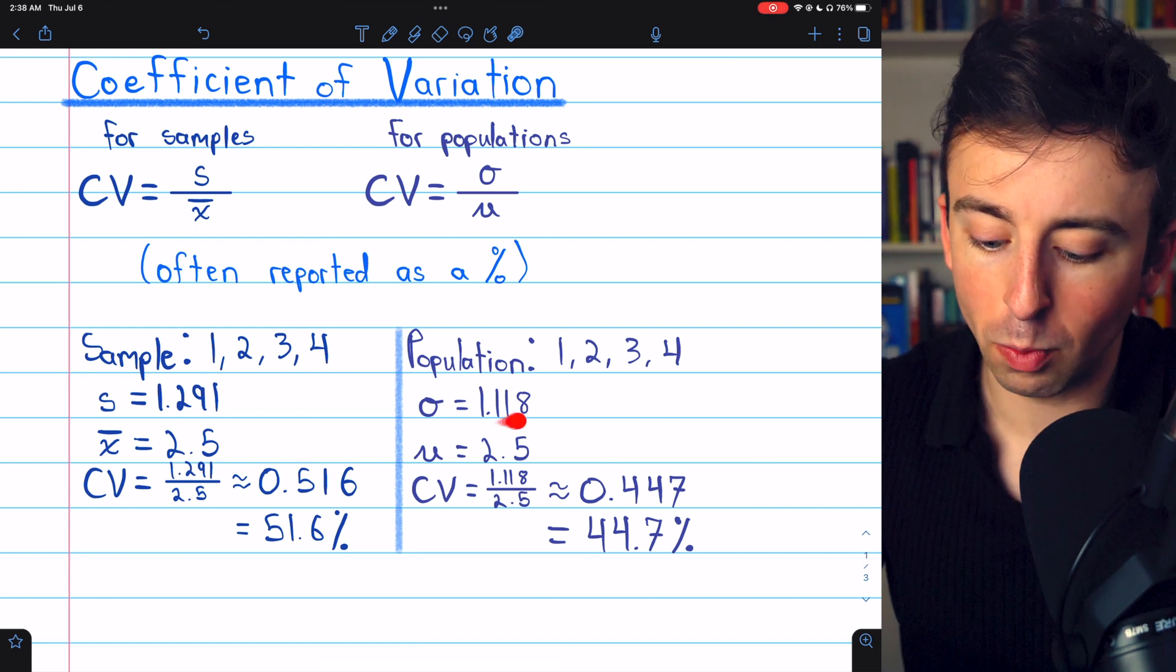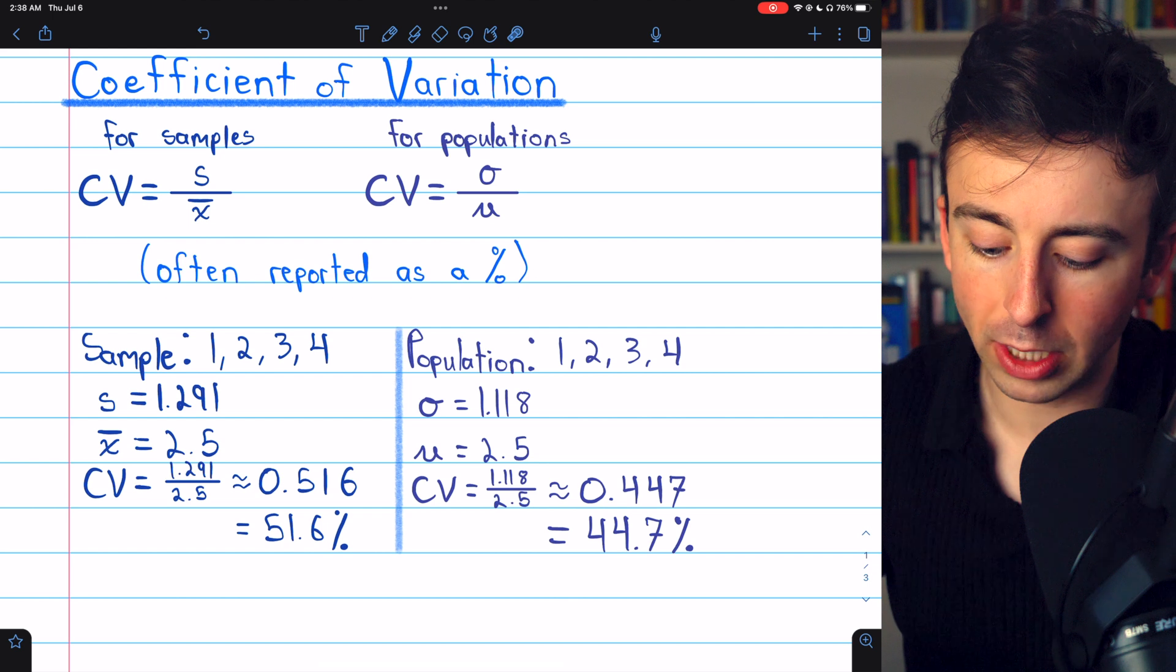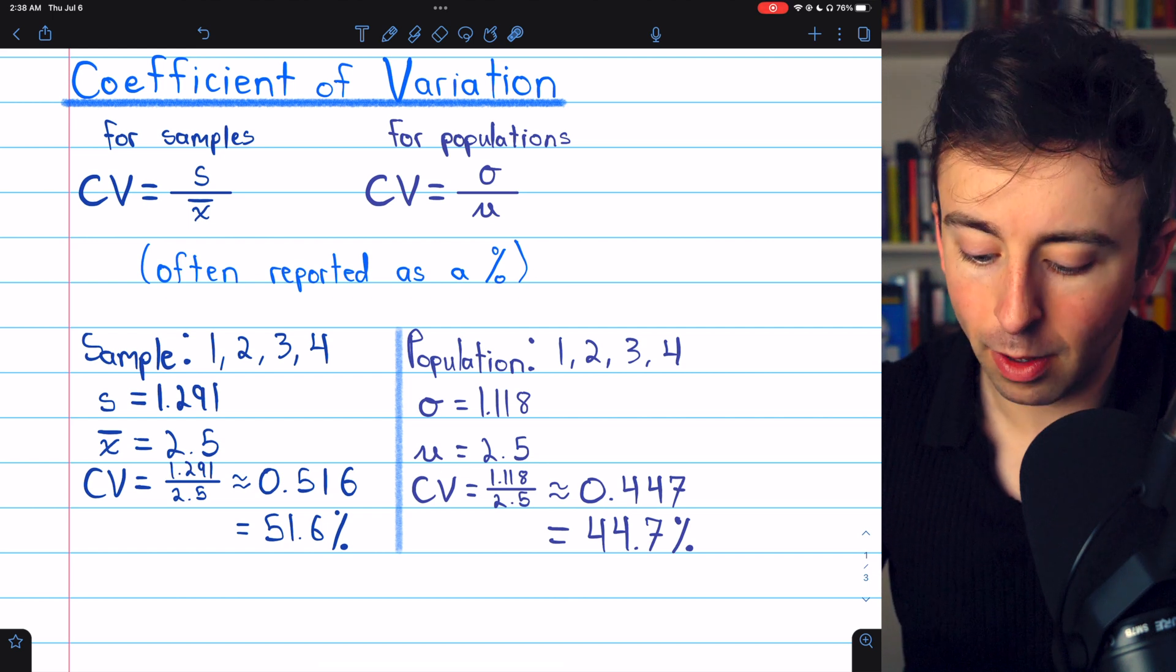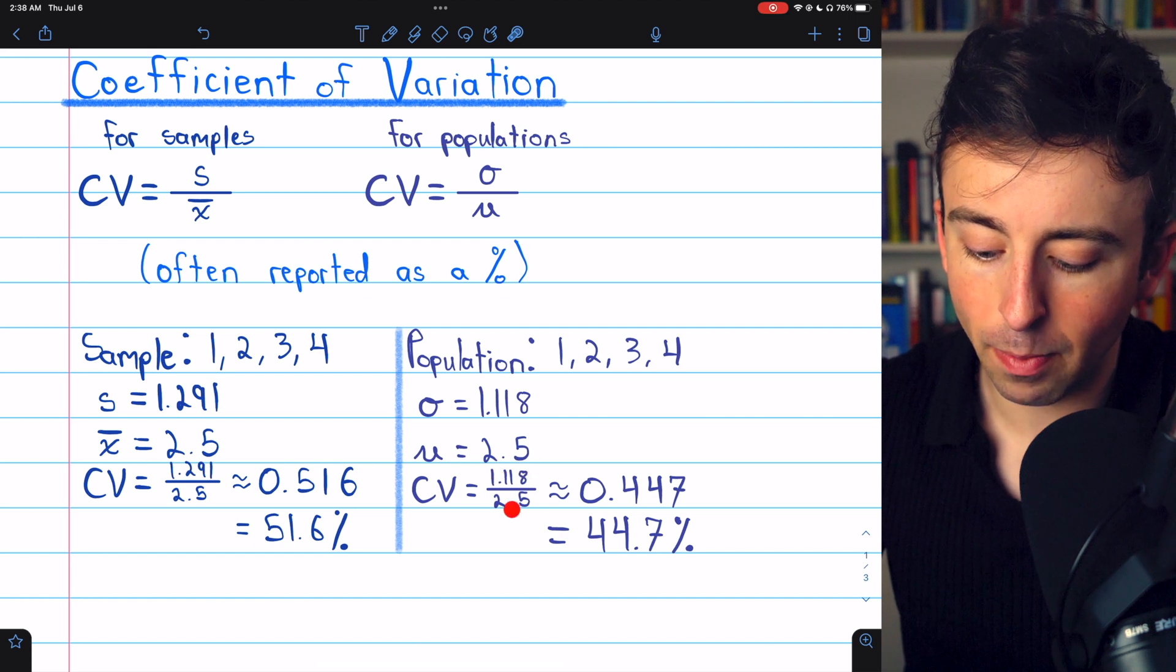But the population standard deviation would be 1.118, the mean would still be 2.5, and then the coefficient of variation would, again, be the standard deviation divided by the mean,